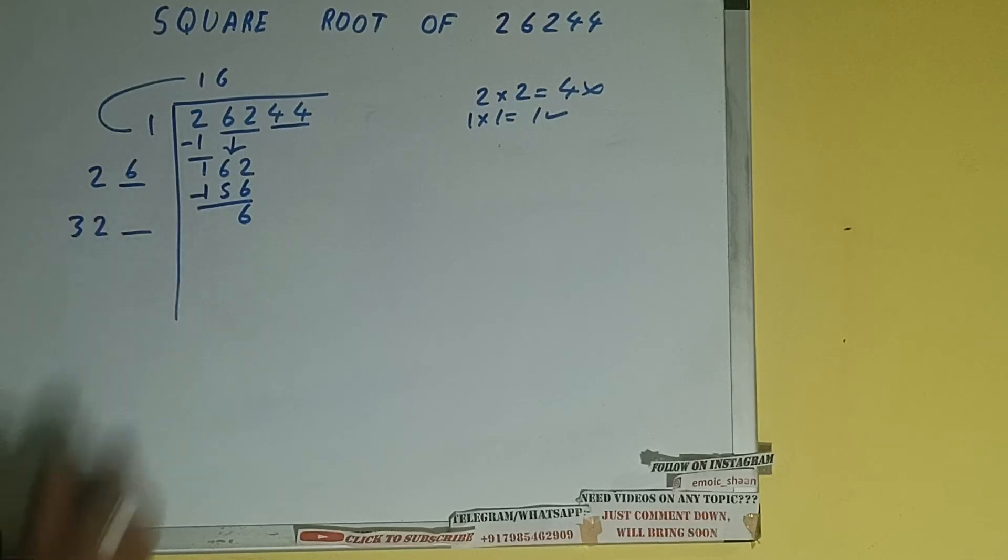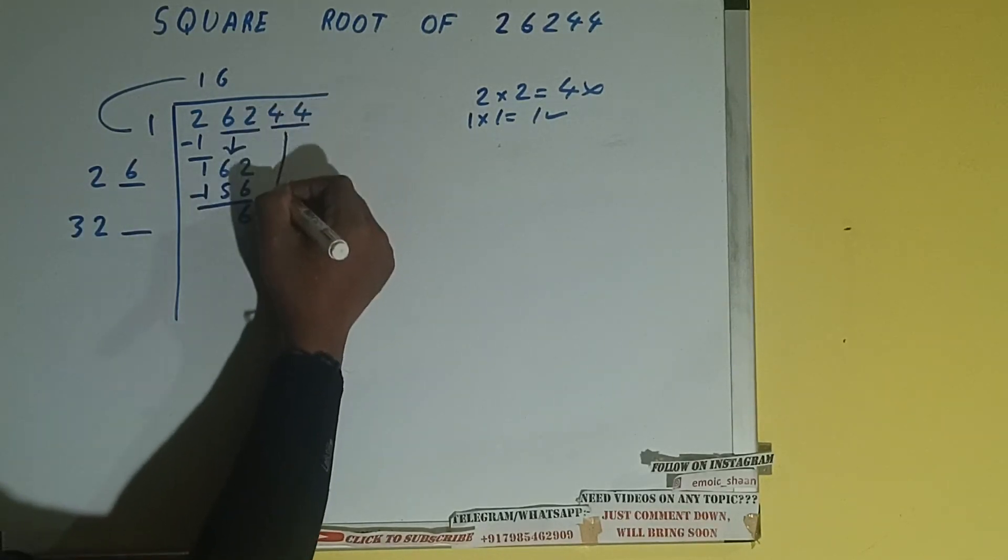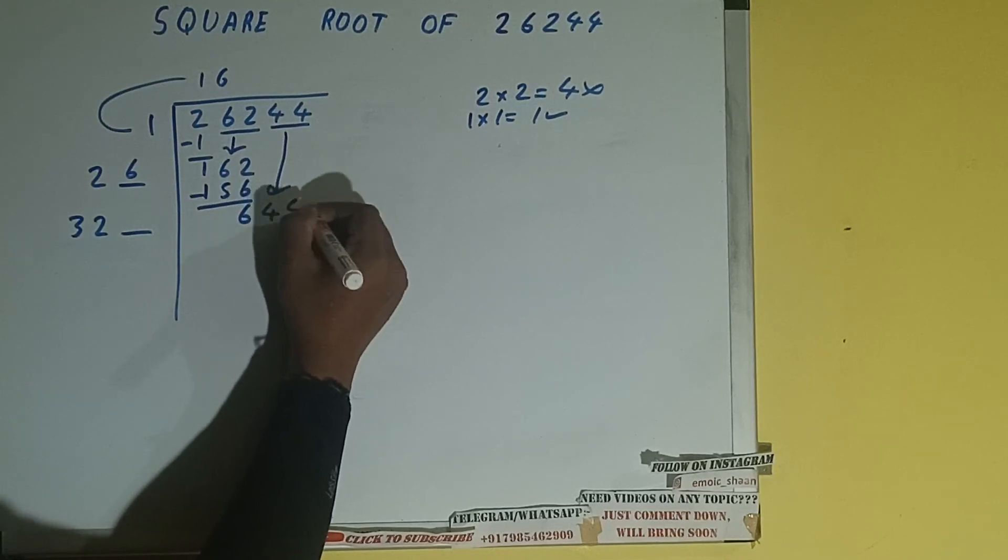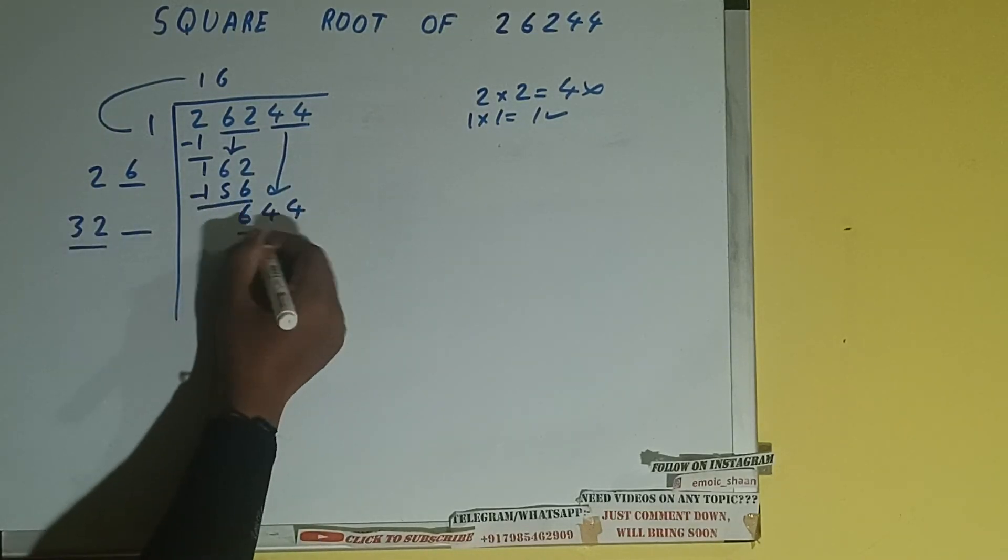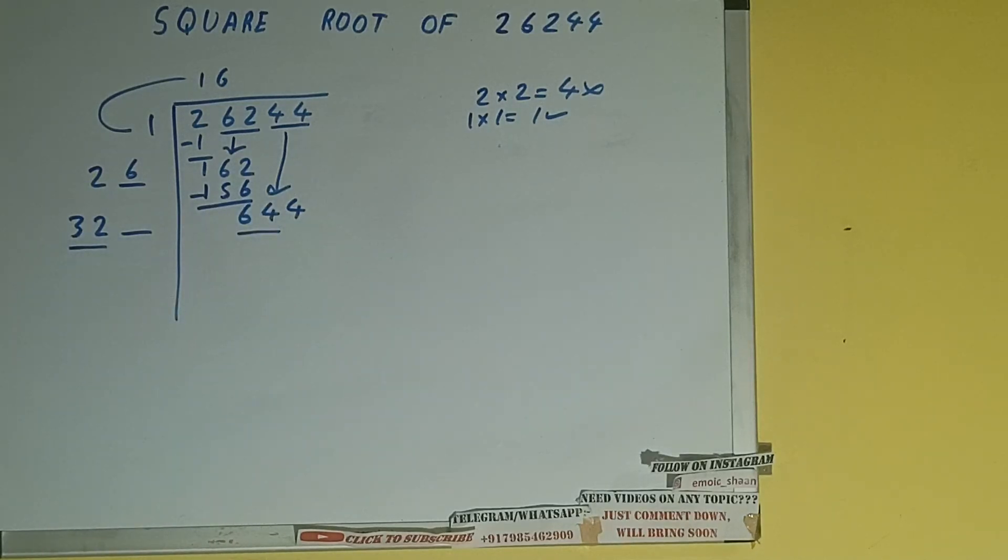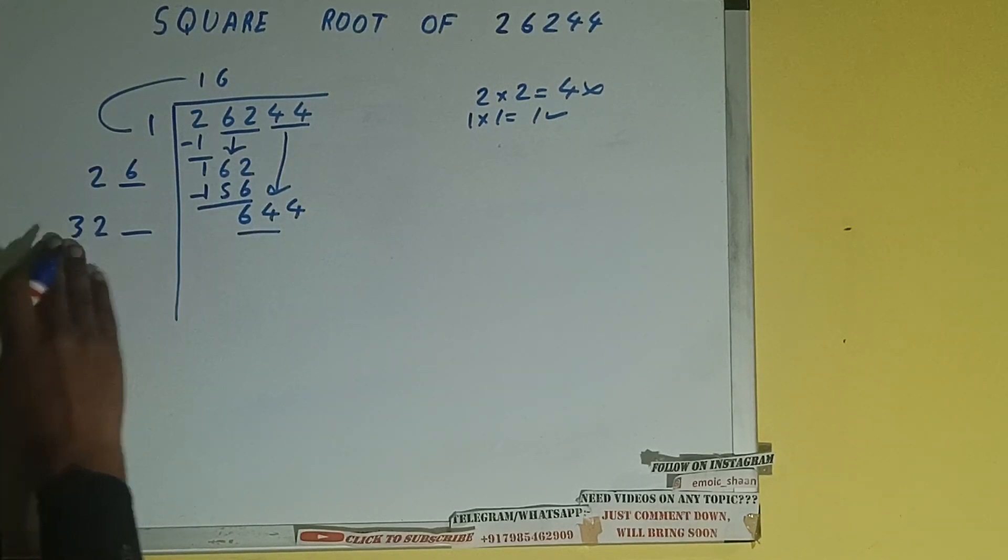And keep a digit extra, and this number we need to make it big. So bring the next pair down and it will be 644. Now compare this 32 and 64. So 32 two times is 64, so try 2 times. 2 here and 2 here.